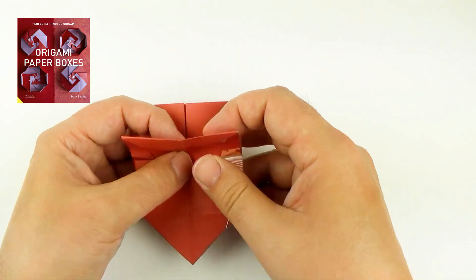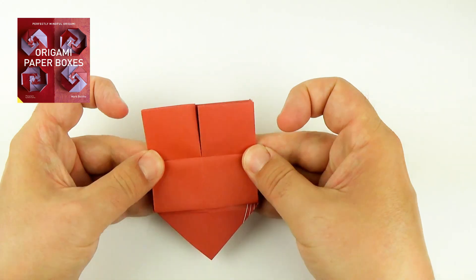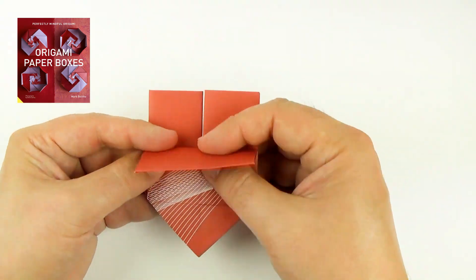Now take this whole section and fold it down. It's actually trapped by the folds we made earlier, so I'm folding that down. The other side, fold that section over again.